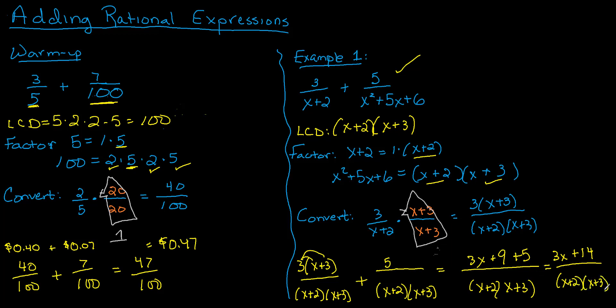One hint that I have is keep the LCD factored. The reason I say that is because sometimes you get to this last step and then you can cancel. It's just easier to see what you can cancel if you kept your denominator factored. So my hint is to keep your denominator factored until the very end.